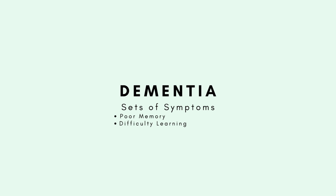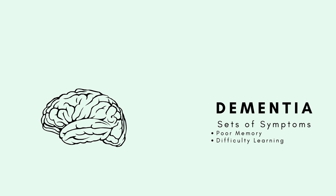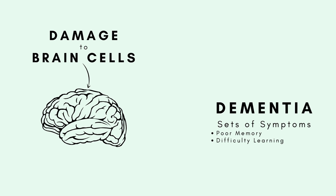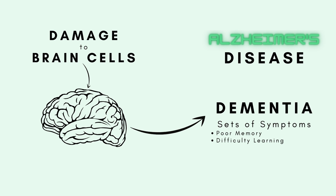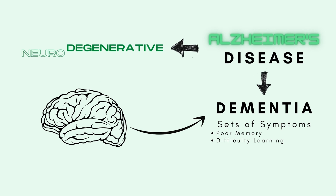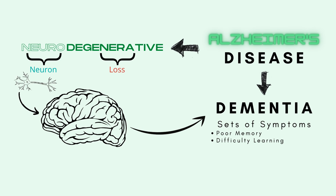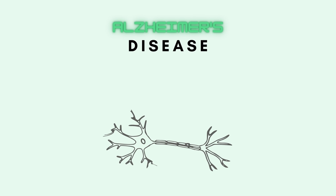Dementia is not technically a disease, but more of a way to describe a set of symptoms, like poor memory and difficulty learning new information, which can make it really hard to function independently. Usually, dementia is caused by some sort of damage to the cells in the brain, which can be caused by a variety of diseases. Alzheimer's disease is the most common cause of dementia. It is considered to be a neurodegenerative disease, meaning it causes the degeneration or loss of neurons in the brain, particularly in the cortex, which leads to the symptoms characteristic of dementia.